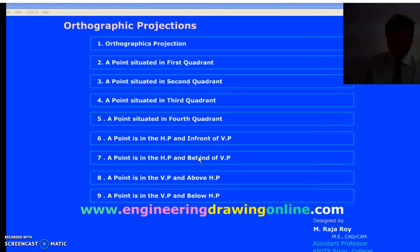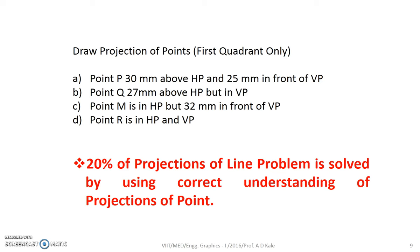There are ready-made videos also available to understand the projection of point — those are available on YouTube, you can refer to those as well. Now these are the problems where the point is located in the first quadrant and we have to draw the projections. For example, point P is 30 mm above HP and 25 mm in front of VP. Try to draw the projections of these four problems A, B, C and D. Note that 20% of projection of line problems are solved by using a correct understanding of projections of point.